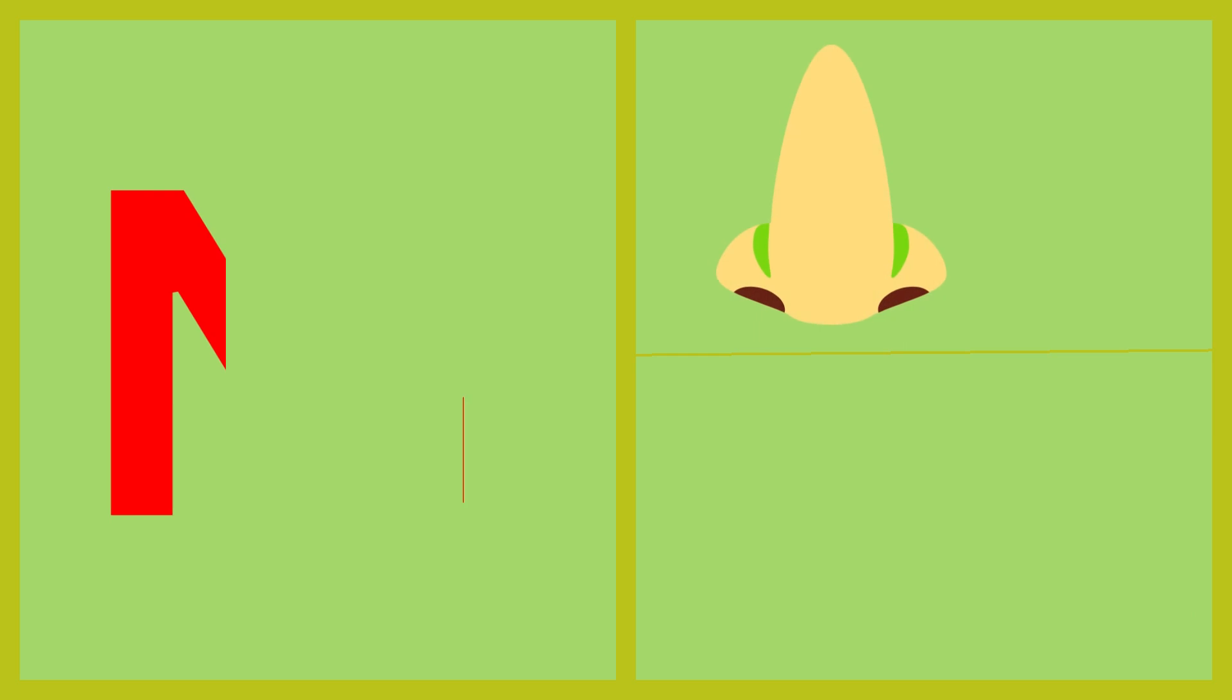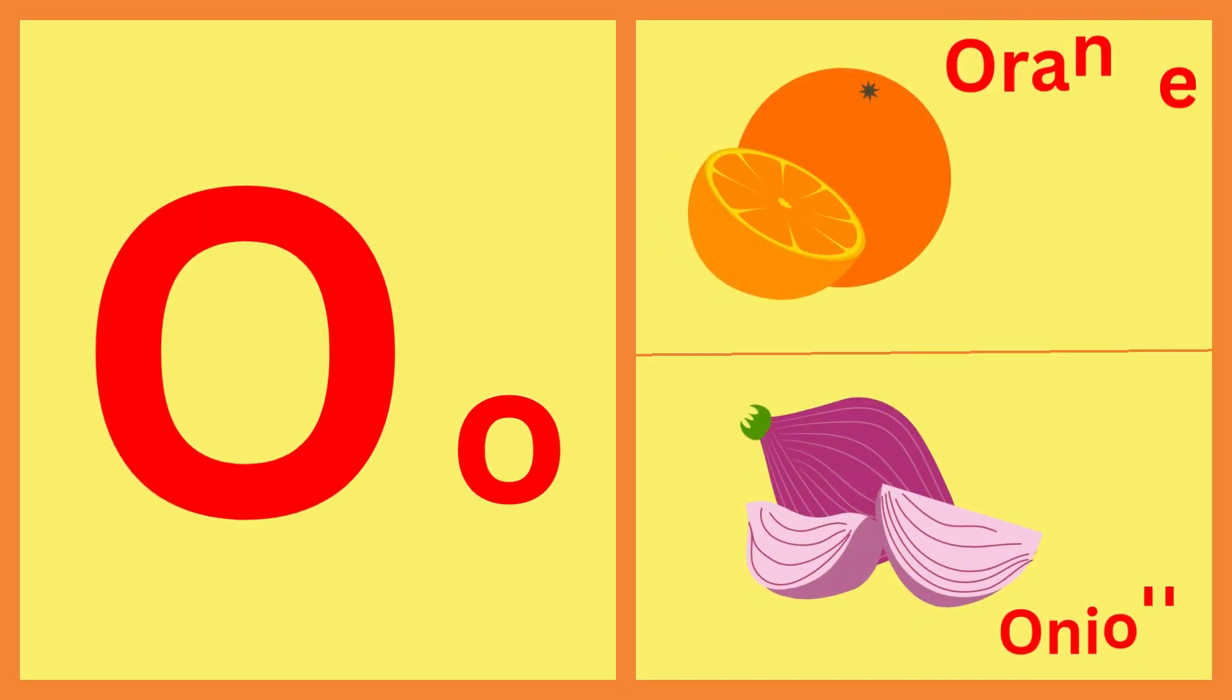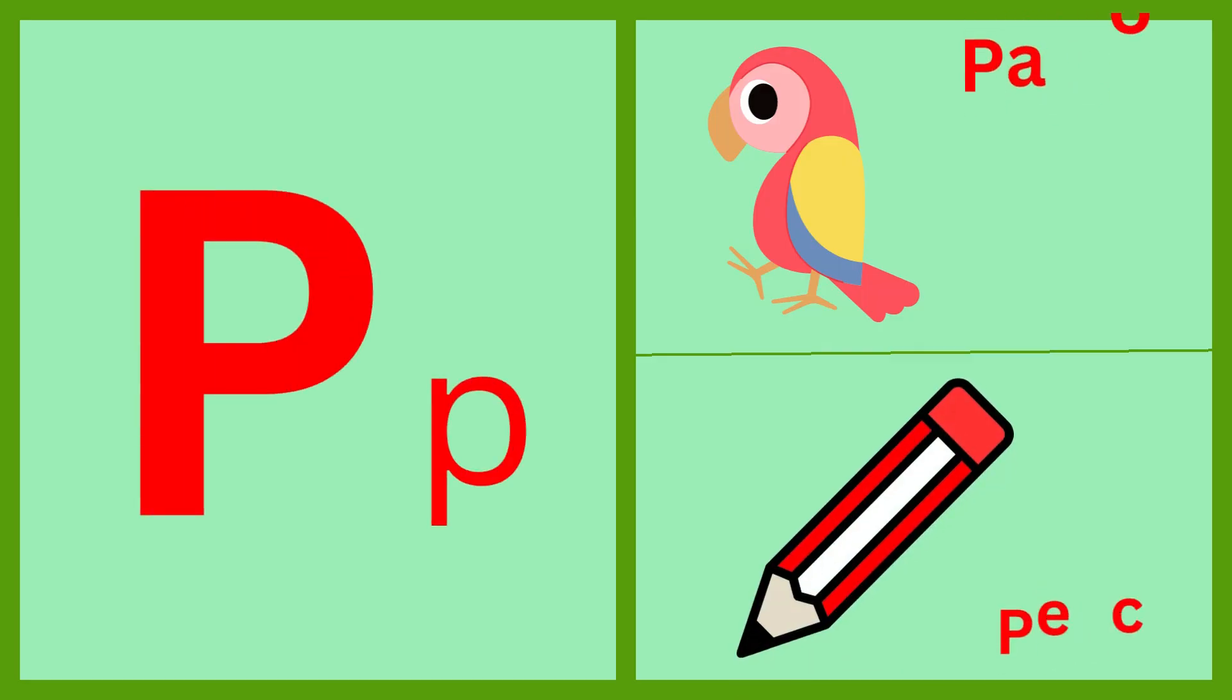N for nose, N for notebook, O for orange, O for onion, P for parrot, P for pencil.